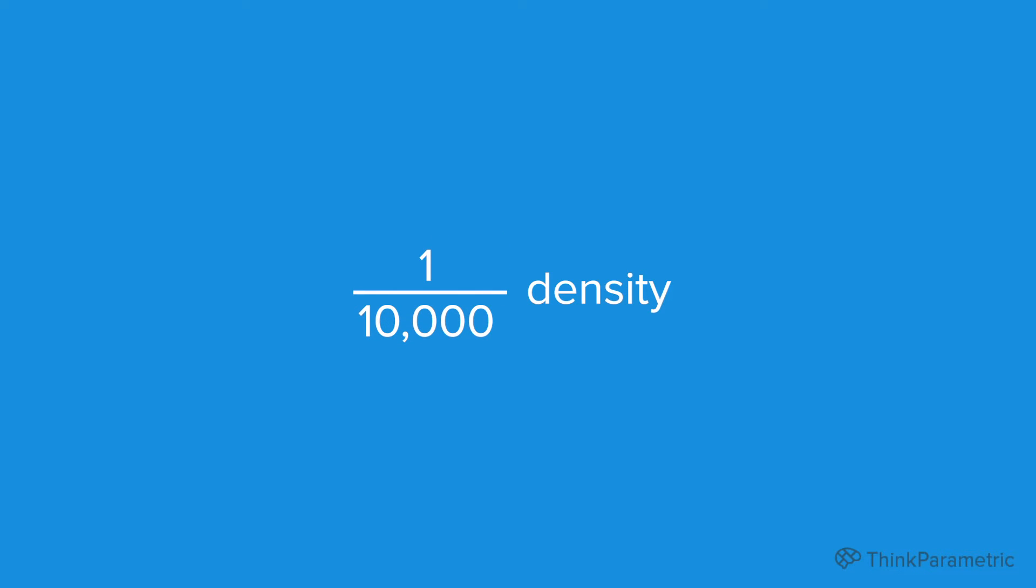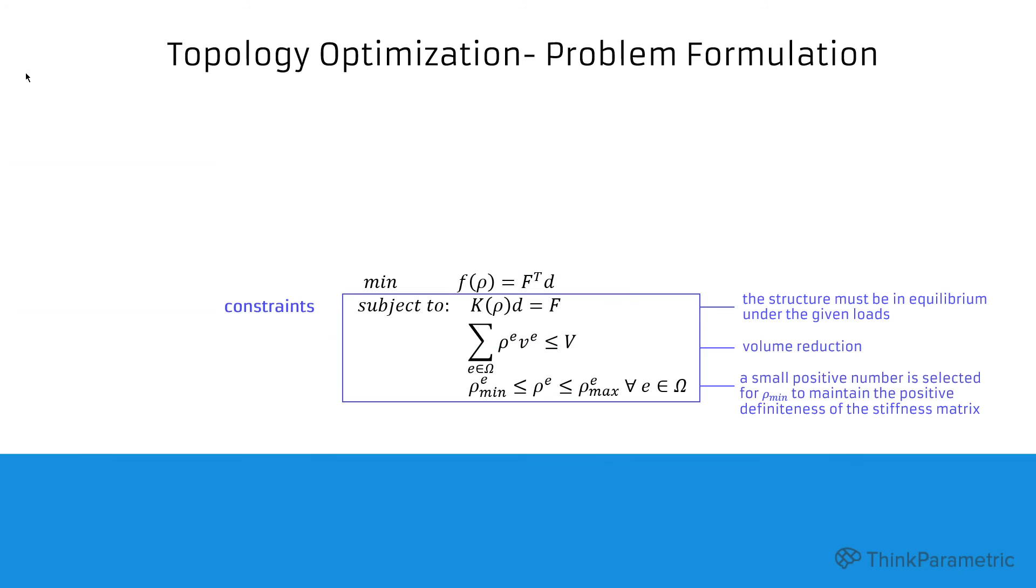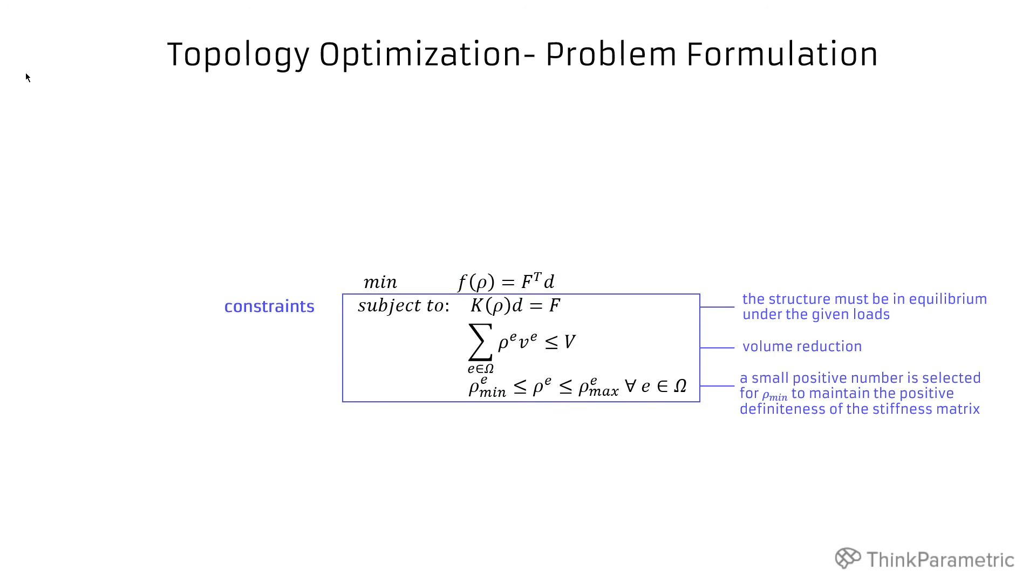So basically this element exists but is so flexible so soft that it doesn't contribute to overall stiffness. And this is very important because also in our BESO for Karamba we have similar approach called soft kill approach. Then instead of removing physically the elements the very tiny cross section for the shell is assigned.